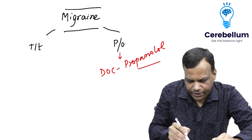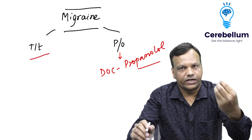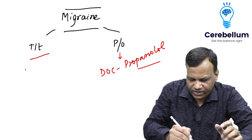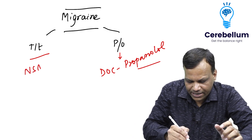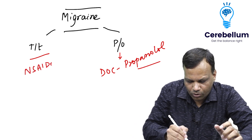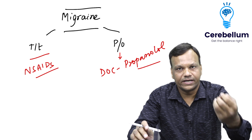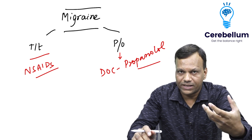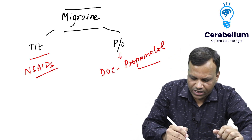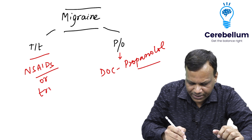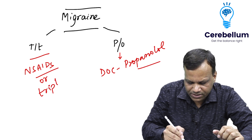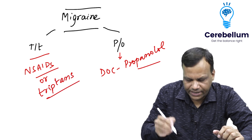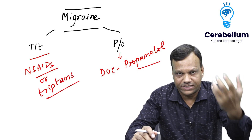Now coming to treatment. Because it is a headache, we will start with NSAIDs like paracetamol or aspirin. If it cannot be controlled by them, then we give the drug of choice for severe migraine, which are called triptans — drugs like sumatriptan.